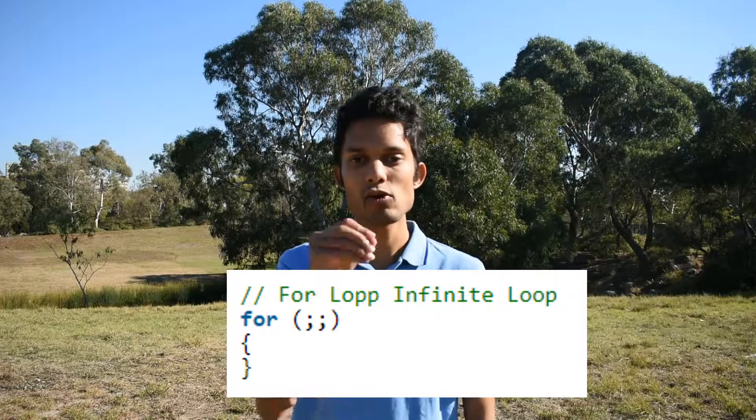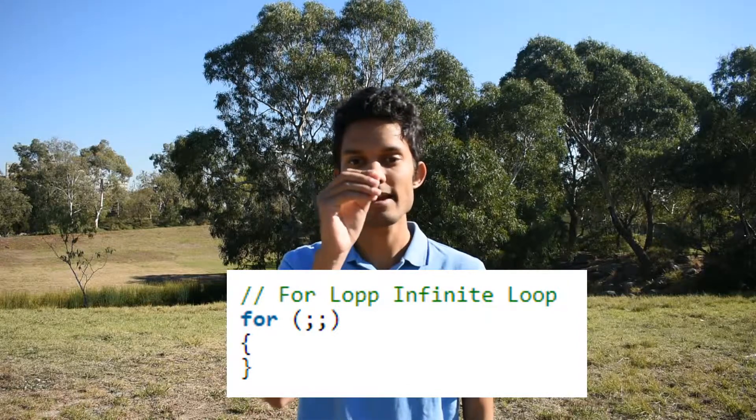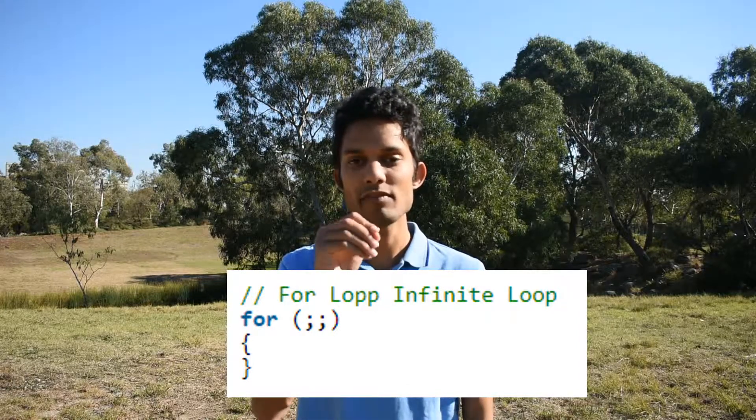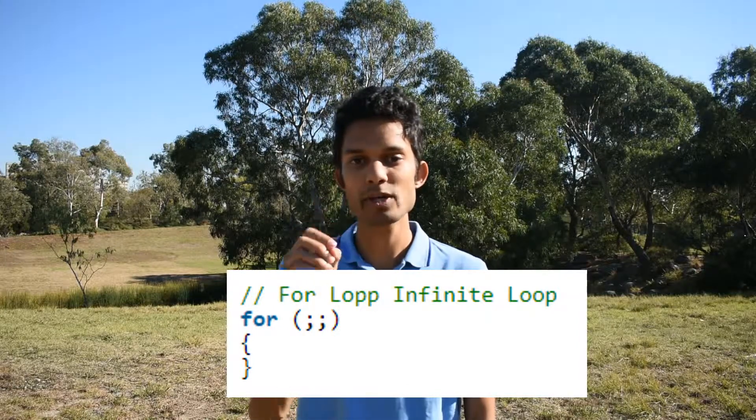The second way we can write an infinite loop is using the for loop. All we have to do is write for, and then in the brackets all we have is two semicolons, and then two curly brackets underneath to write a for infinite loop.